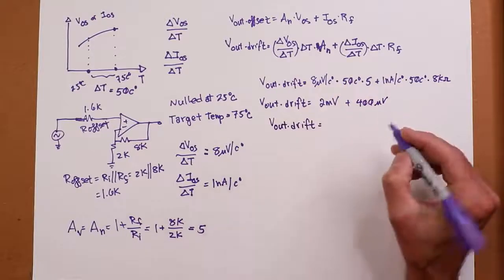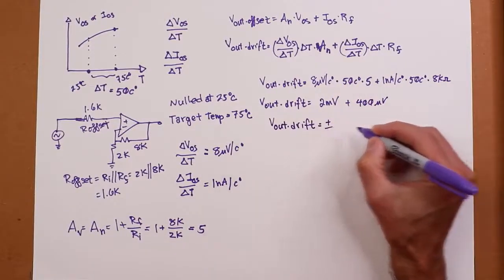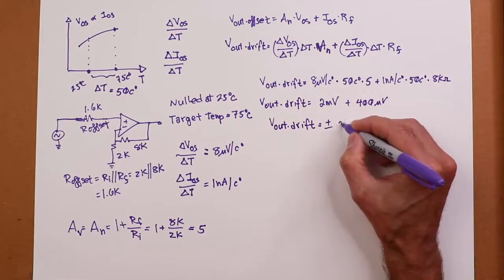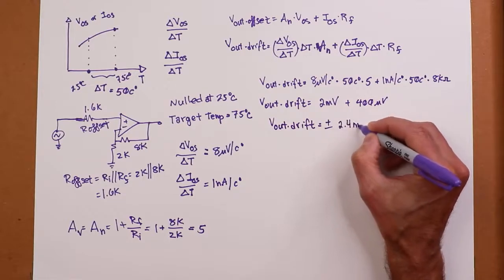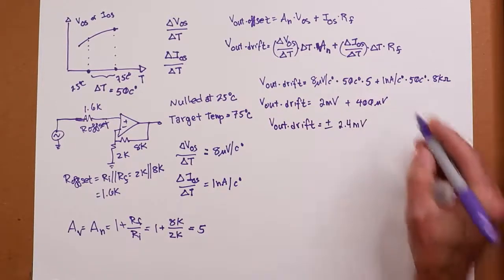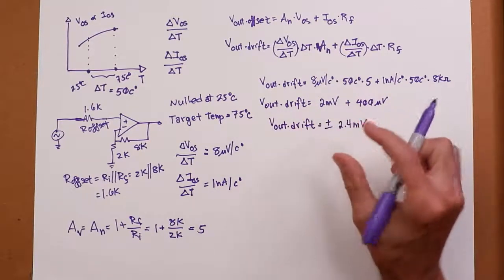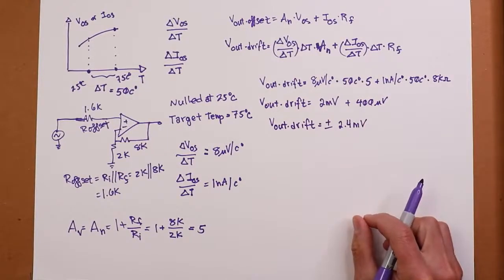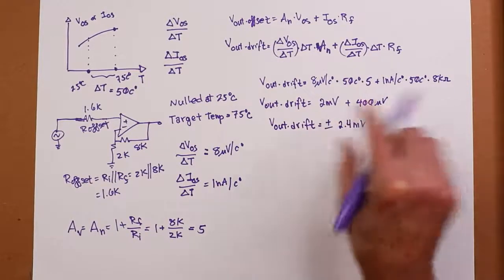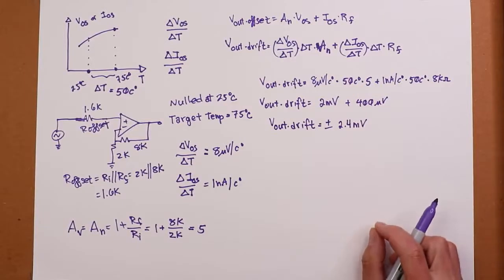And the V_out drift, again it's always a range from a negative 2.4 millivolts up to a positive 2.4 millivolts. Alright. That's the envelope that we have of temperature-induced drift, temperature-induced offset, DC offset at the output.